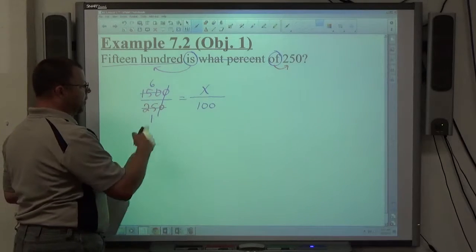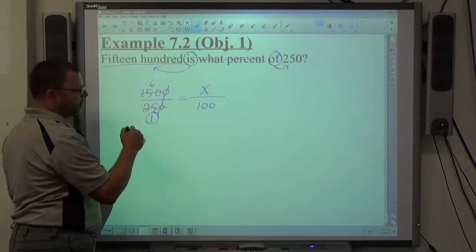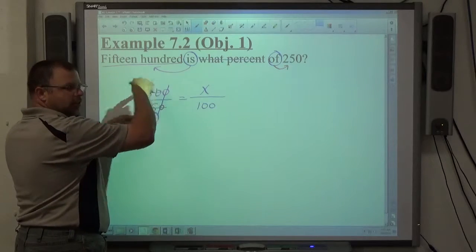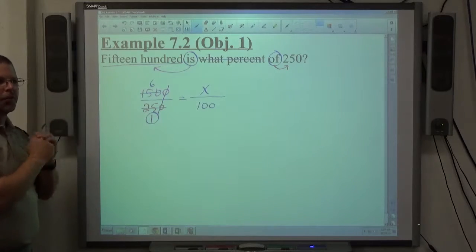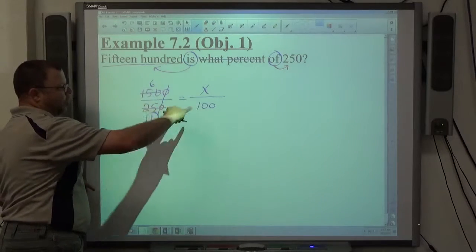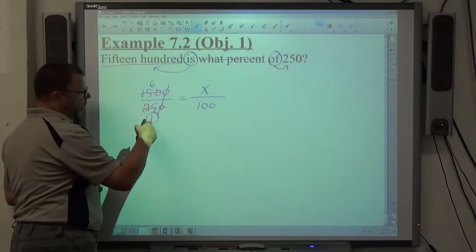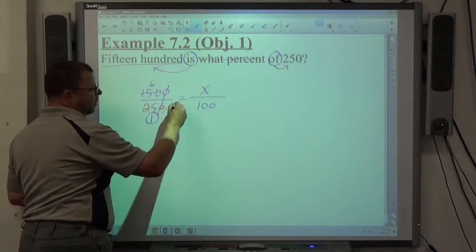Once you get everything reduced, once this is a 1, you can't go any further. I can't reduce 1 with 100 or 6. I've seen people try to reduce this way, but you're multiplying diagonally. So be careful that you're only reducing vertically or horizontally, not diagonally. Once you get a 1 opposite your x diagonally, you can't reduce it.